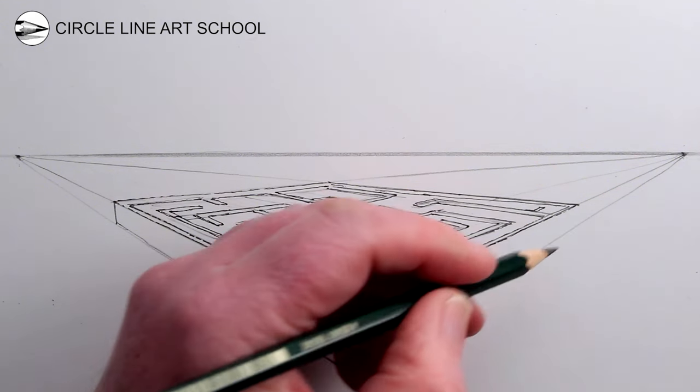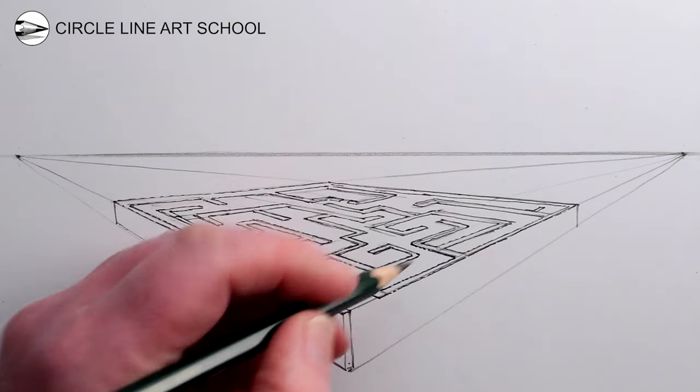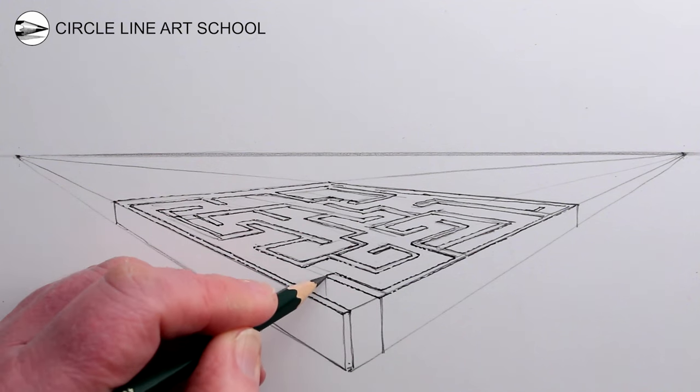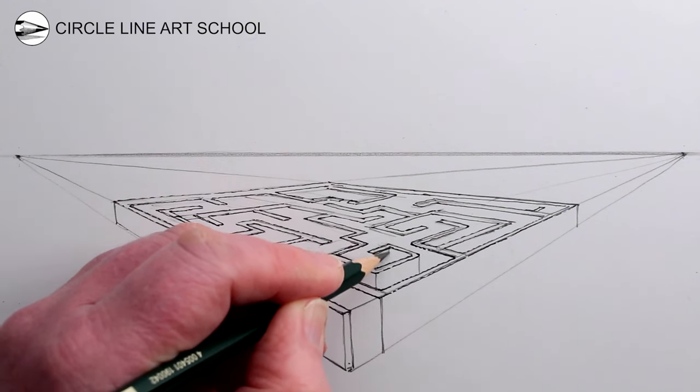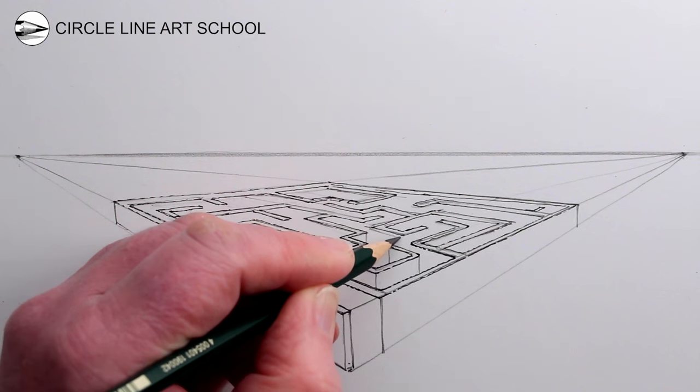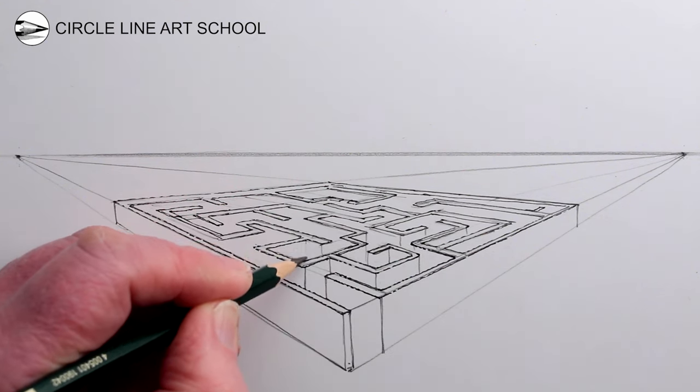And then you could add a series of vertical lines to create the sense of depth to the two-dimensional quality of the maze, so that it becomes a three-dimensional maze drawn in two-point perspective.